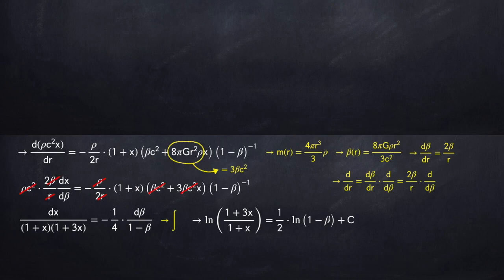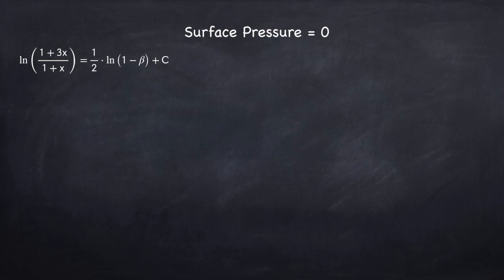Which can then be integrated to get the following relationship between x and beta, where this capital C is just some constant.